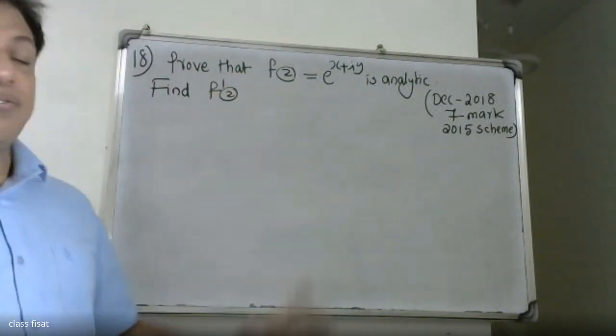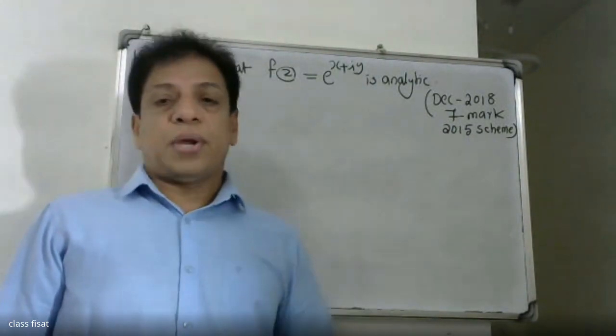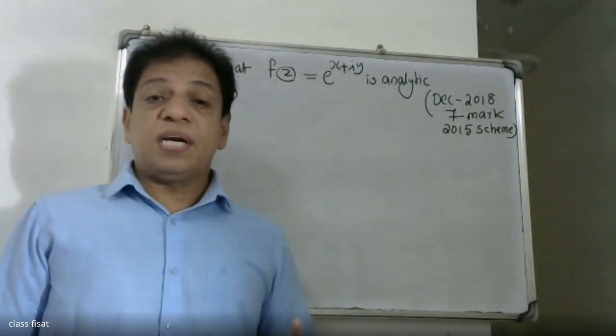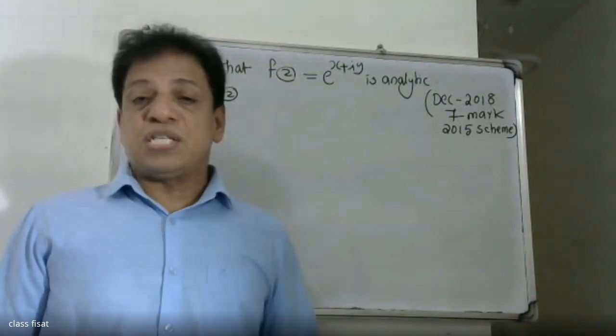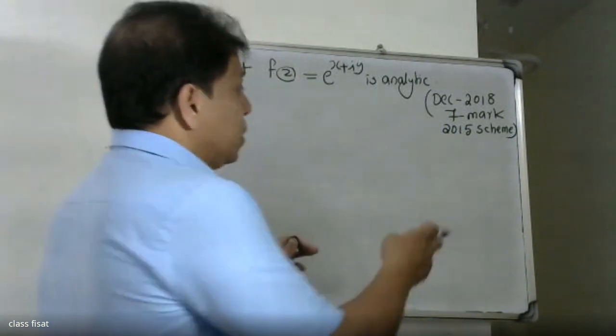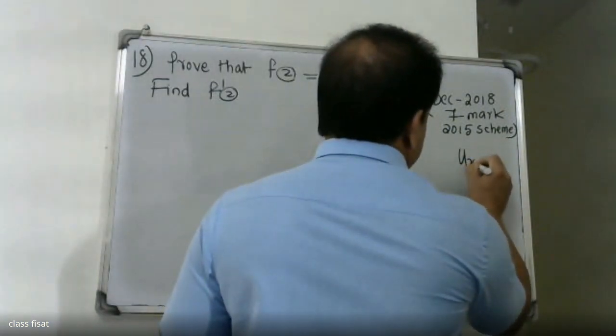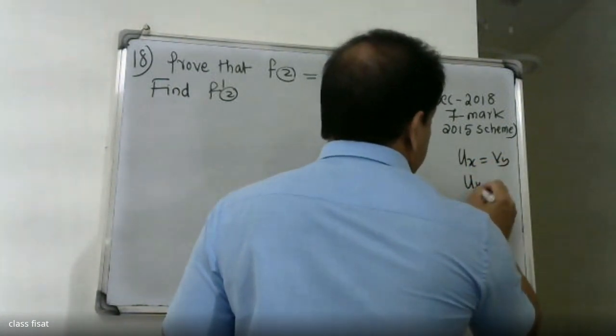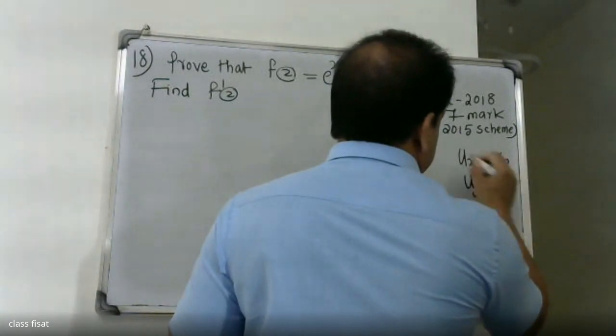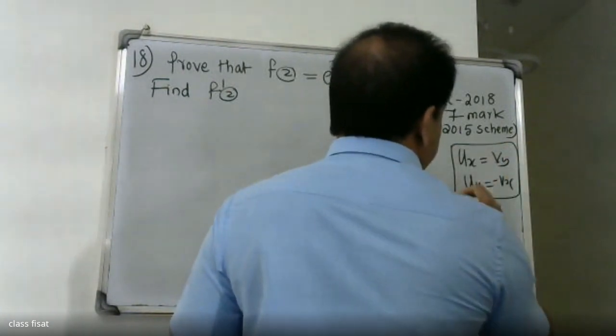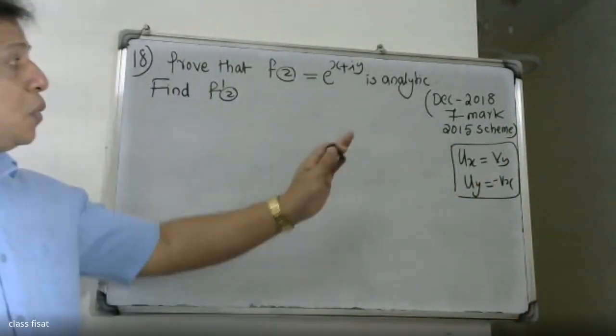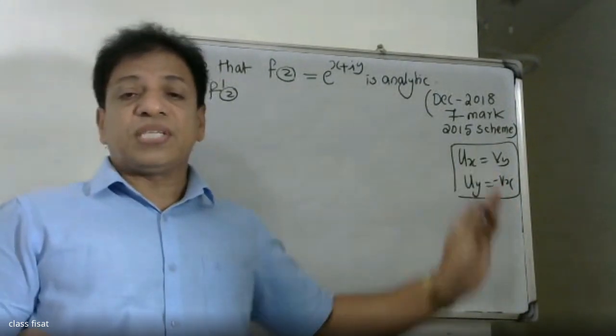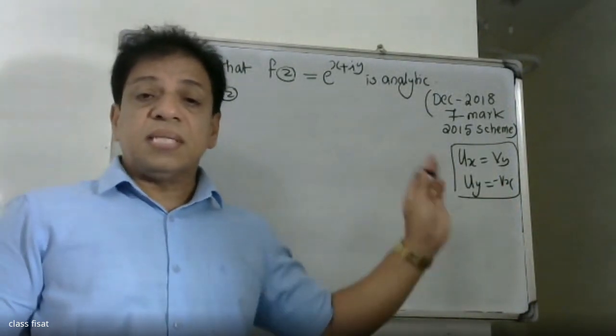Now let's work through this problem properly. I'll take the function f(z) and demonstrate the analytic property. We'll use the Cauchy-Riemann equations to verify that this function is analytic.